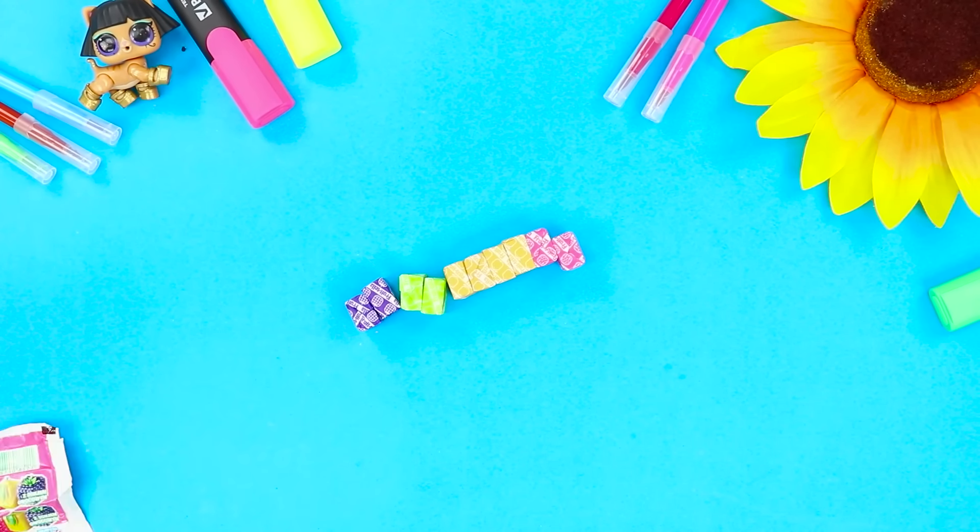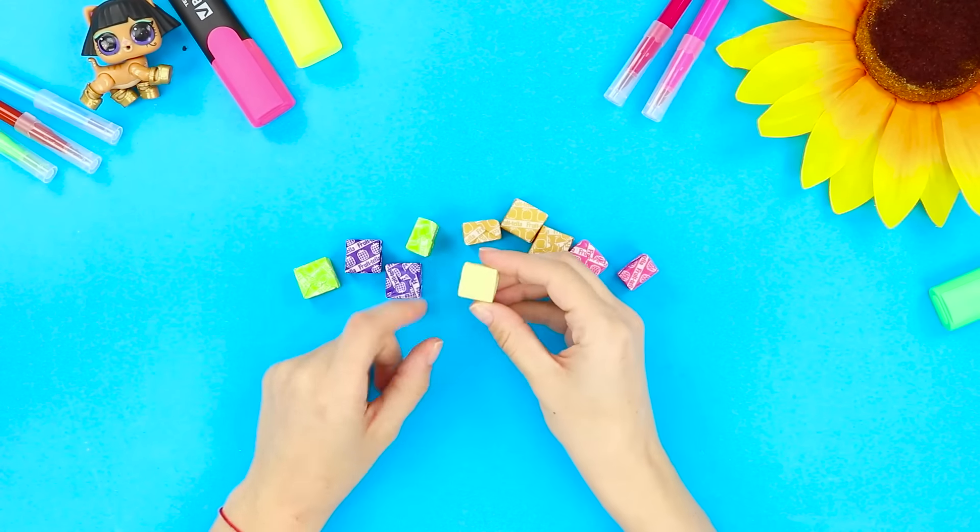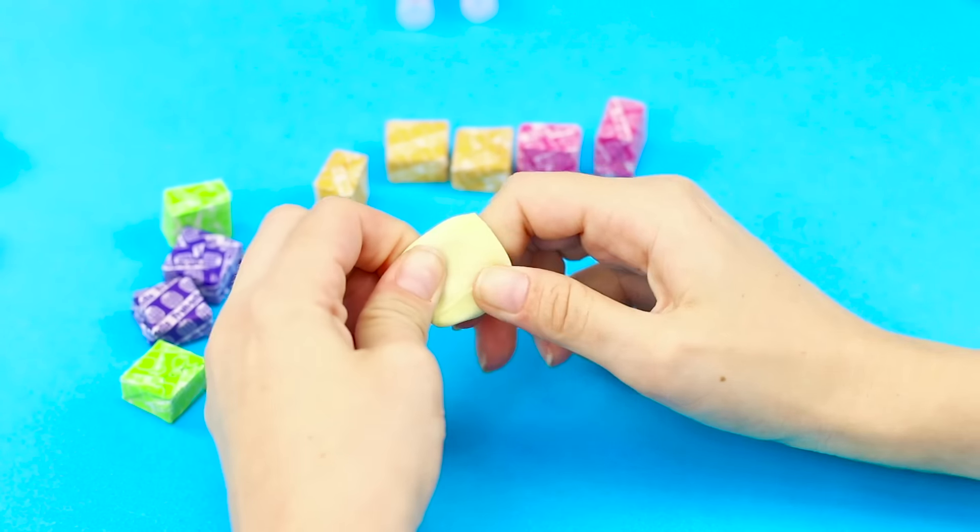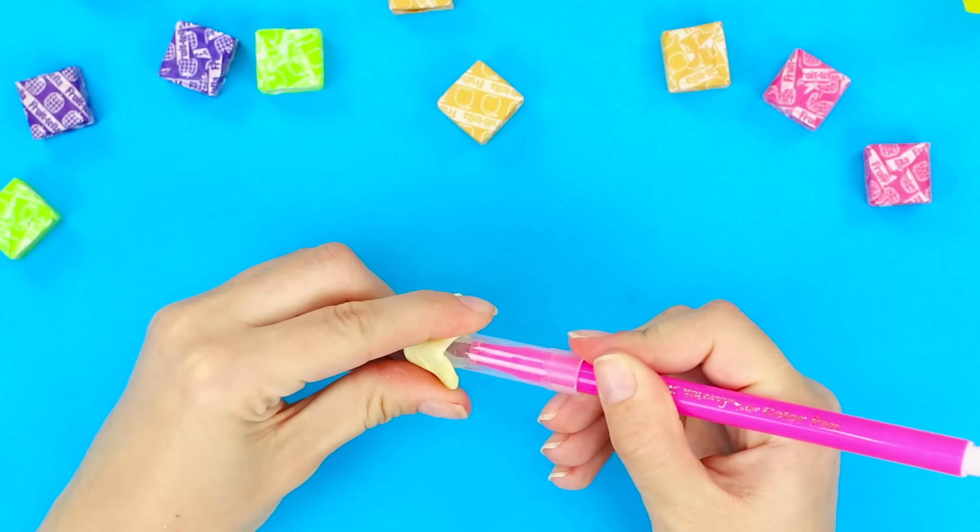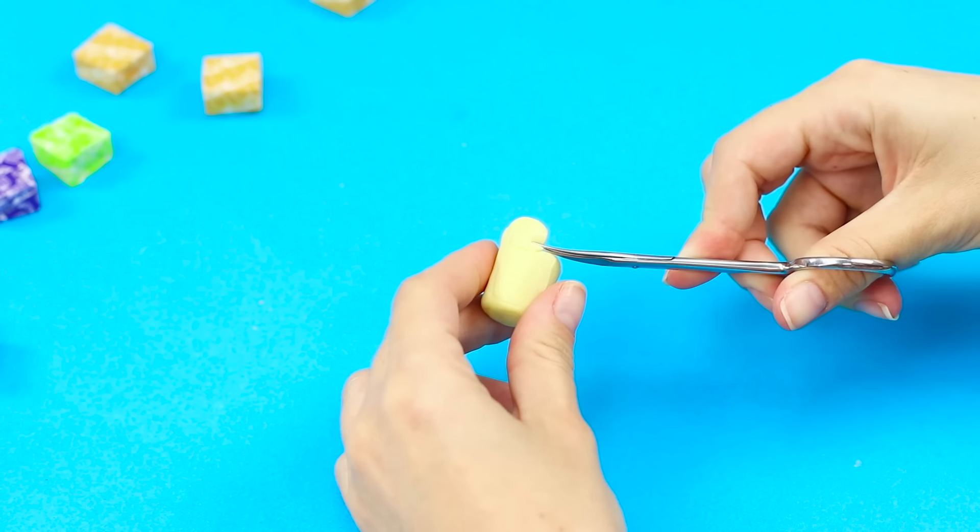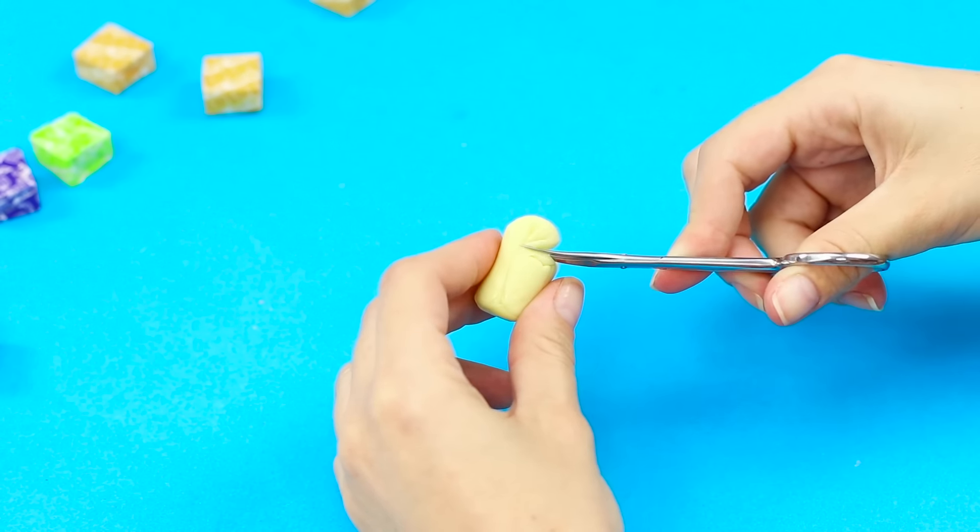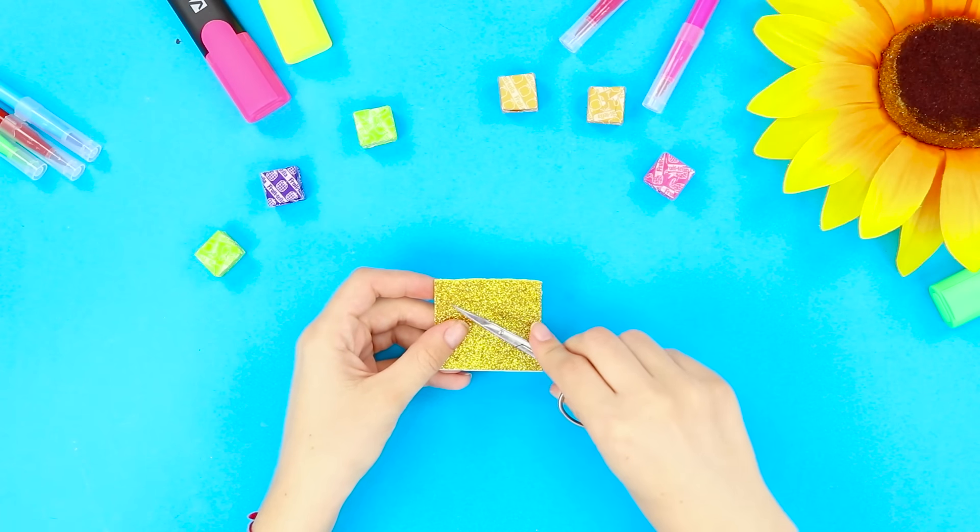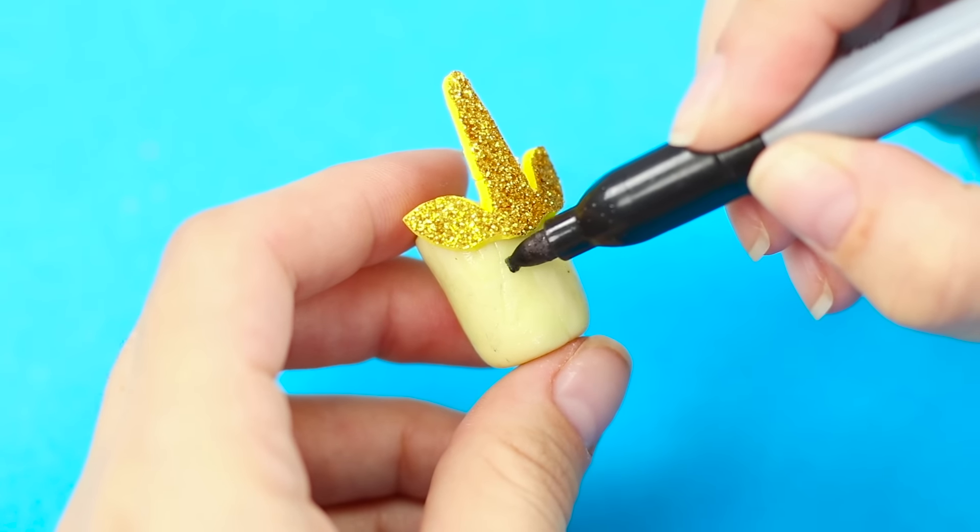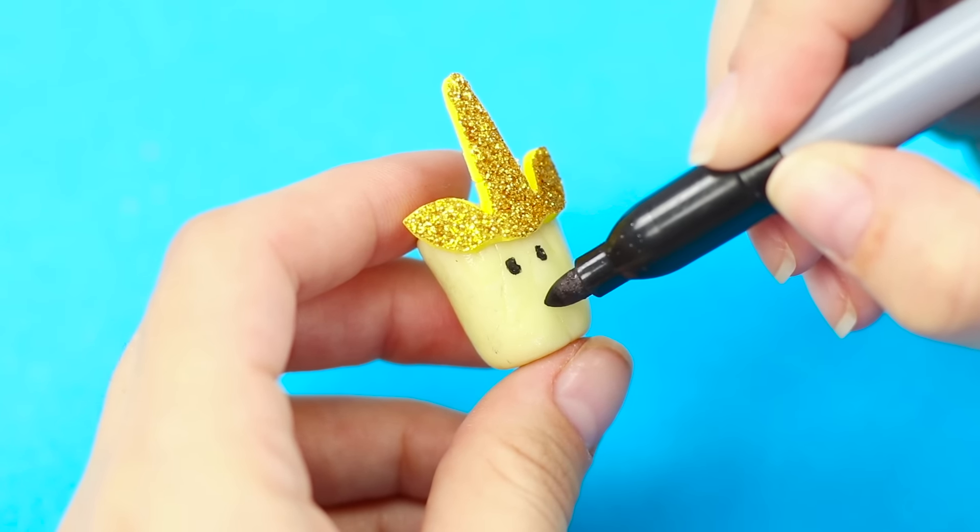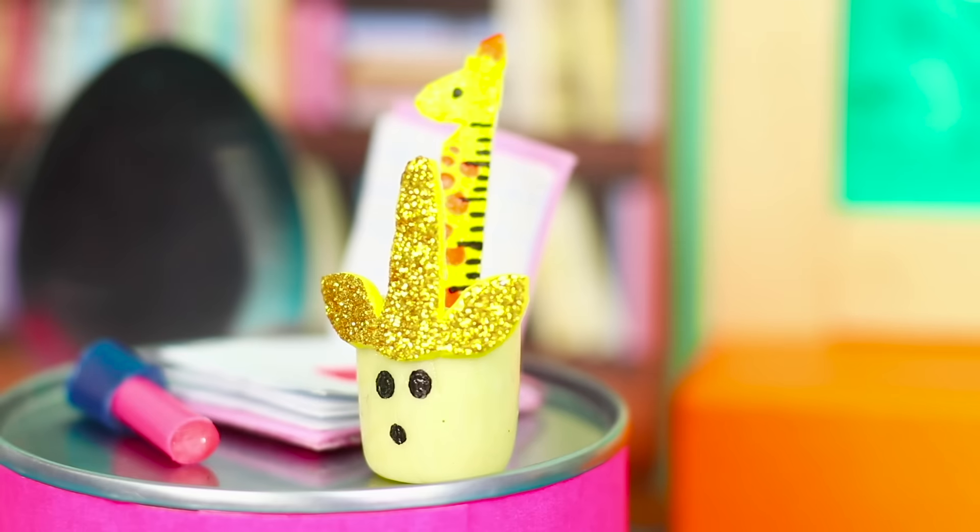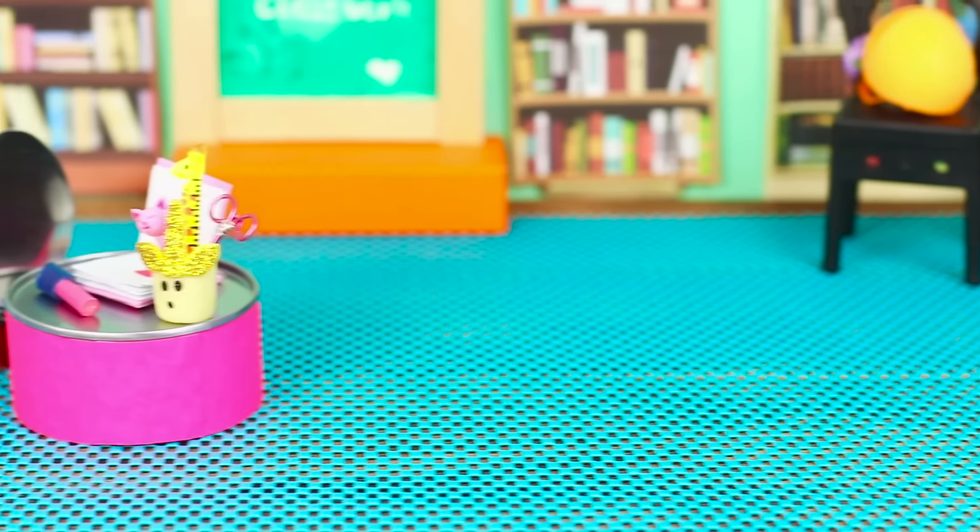And now we will show you how you can use chewy fruit candies. Take one piece and knead it in your hands like clay. Take a pen with a cap and cover the cap with the candy like this to get a cup. Cut off the excess with nail scissors. Cut a horn and ears out of foam paper. Glue them to the cup. Draw a pretty face with a marker. Place all the supplies in the cup. An organized desk is the key to good grades. Click like if you agree!